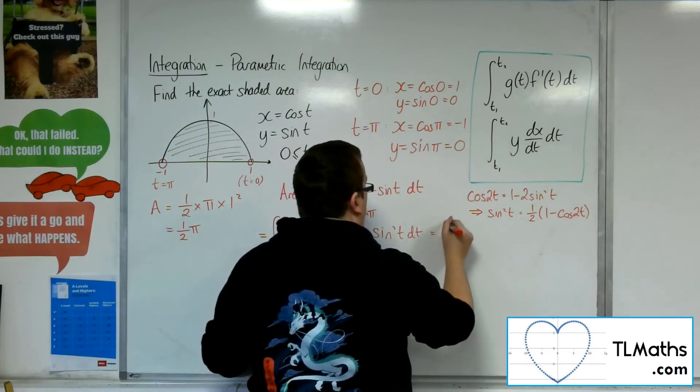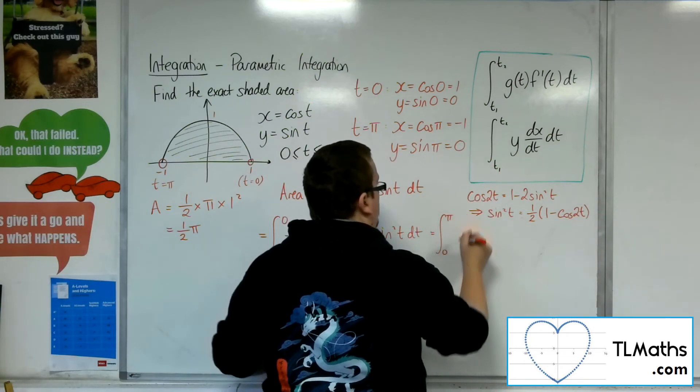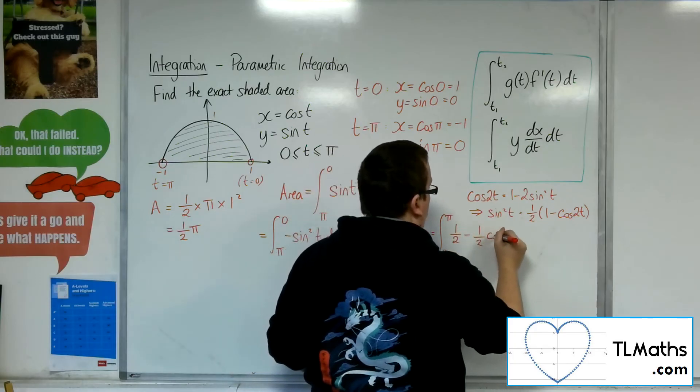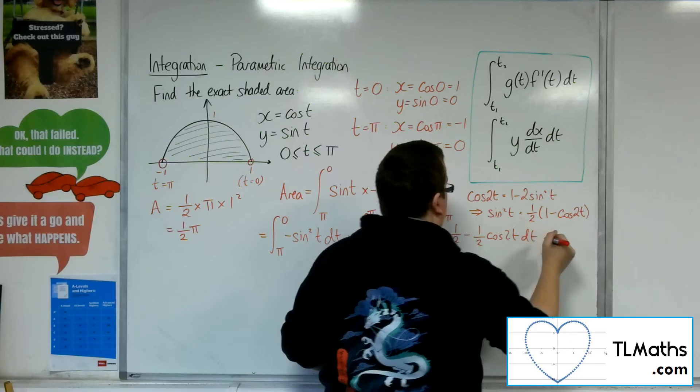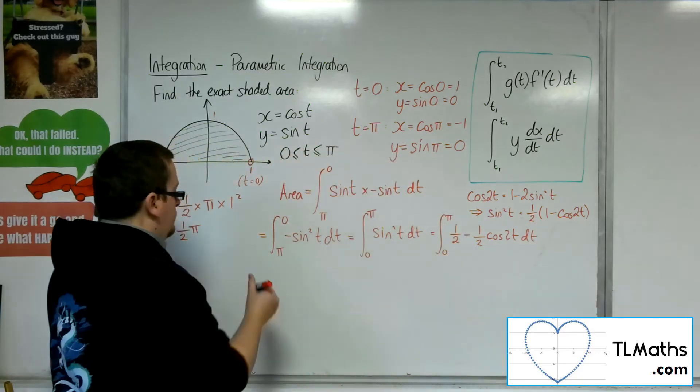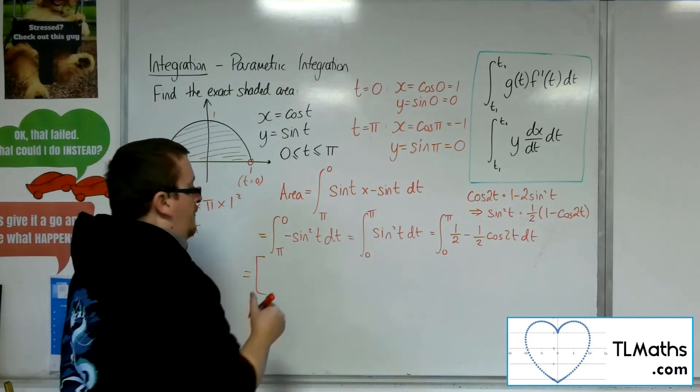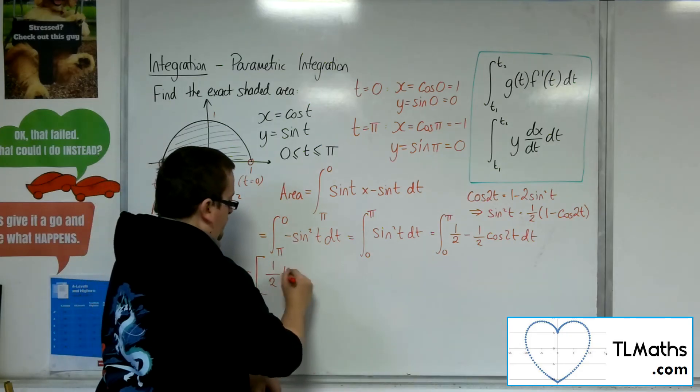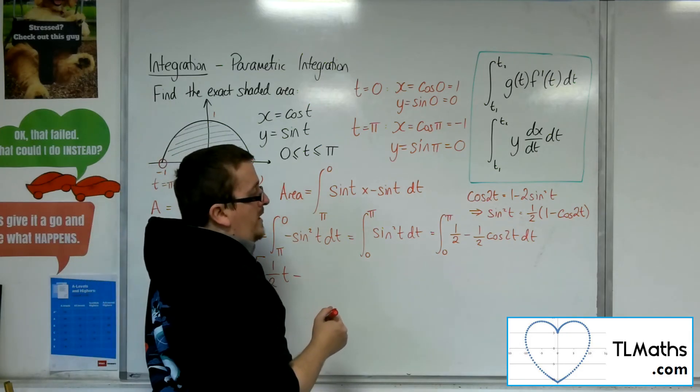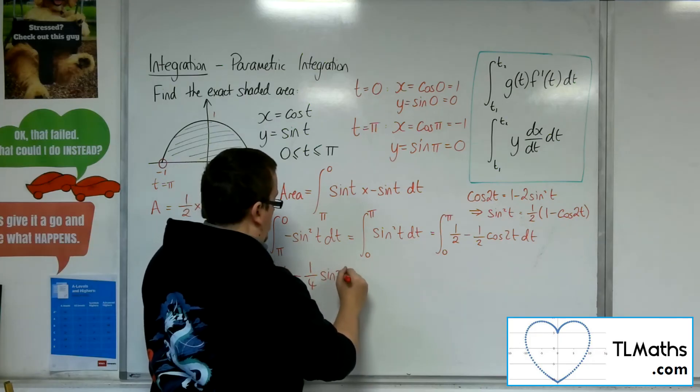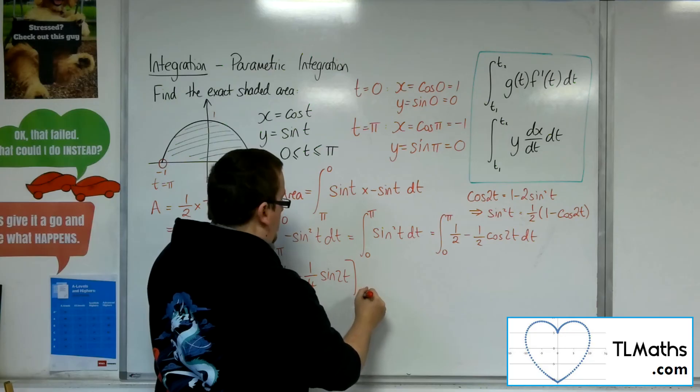So this is equal to the integral between 0 and pi of 1 half, take away 1 half, cosine 2t dt. So 1 half integrates to a 1 half t, take away. Now, integrating that, we'll get 1 quarter sine 2t integrated between 0 and pi.